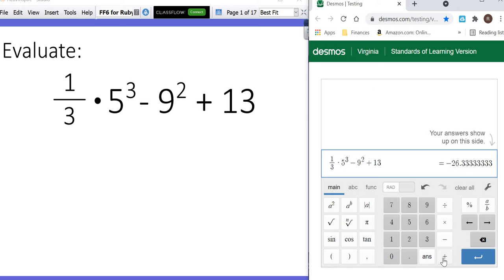So if you look at that, one-third times 5 cubed minus 9 squared plus 13, you type that directly into your calculator, and that equals 26.3, and that 3 repeats over and over and over and over again.